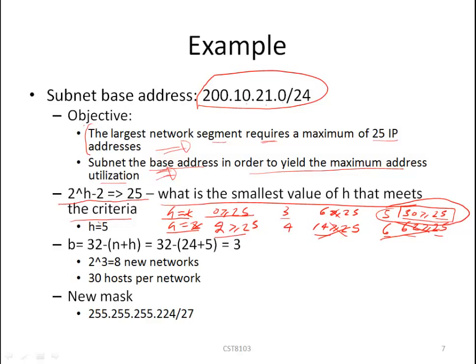Now that we have the number of host bits that meet our criteria, how many bits do we need to borrow? The formula is b equals 32 minus (n + h), which is 32 minus (24 + 5). 24 plus 5 is 29, subtracted from 32 equals 3. So we have borrowed 3 bits. We have transformed 3 host bits into network bits, so we have basically broken our base address into 8 network blocks. Each network block can accommodate up to 30 hosts per network, and the new mask is 255.255.255.224 with a prefix length of /27.